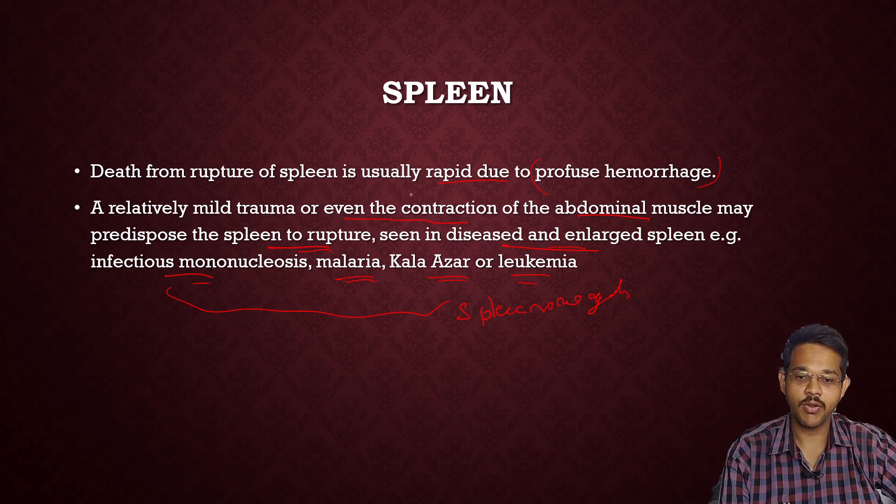Relatively mild trauma or even the contraction of abdominal muscles may also predispose the spleen to rupture. This is seen in diseased and enlarged spleen as in cases of infectious mononucleosis, malaria, kala-azar, and leukemia. In these conditions, there is splenomegaly, so even the smallest contraction of abdominal muscles may cause the spleen to rupture and the person may die.